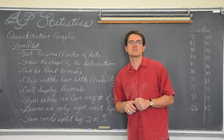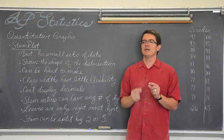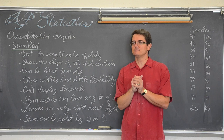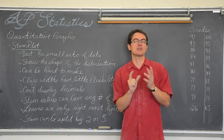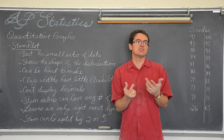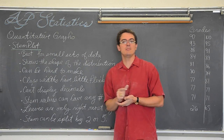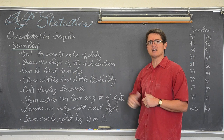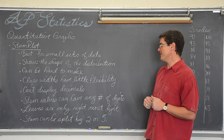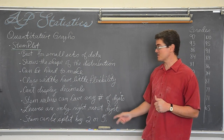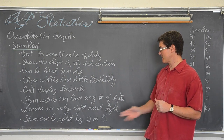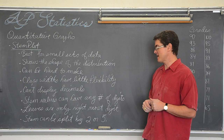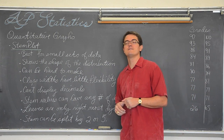Class widths have very little flexibility. Class widths are like how many pieces of data are within that particular class. I don't like to say category because I don't want to get mixed up with categorical variables like gender, race, or your letter grade A, B, C, D, or F. Stem plots can display decimals — we will make up some shoe sizes in a second and deal with that. Stem values can have any number of digits; however, your leaves can only be one digit at the most. Stems can be split by either two or five.